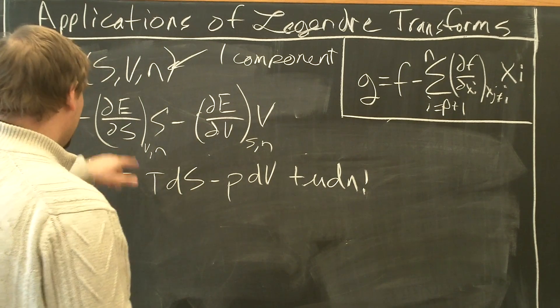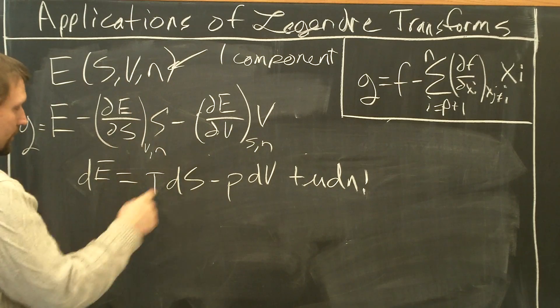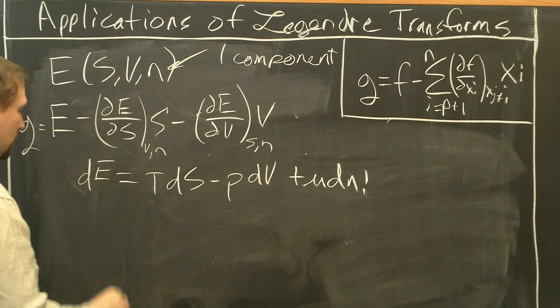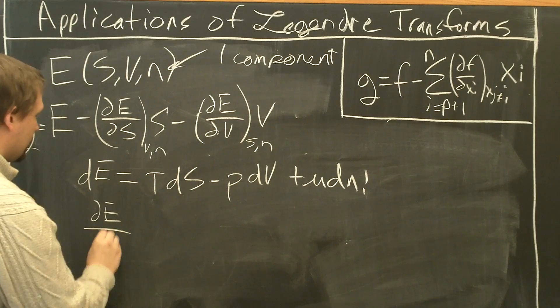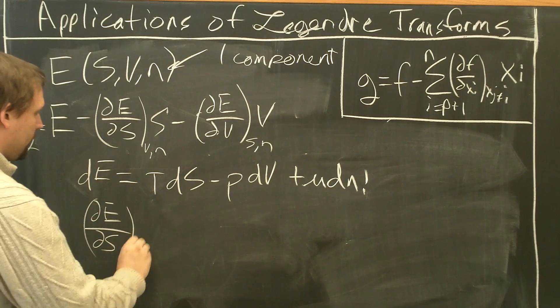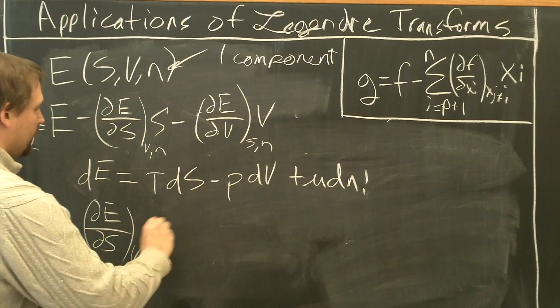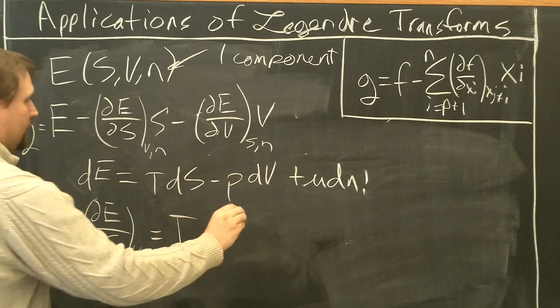And take the derivatives. So dE/dS is going to be equal to T. We did that before. So I'm going to write this down. Partial E with respect to S, everything else we have to fix, V, N, equals T.